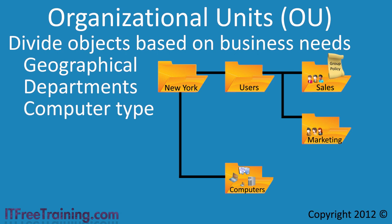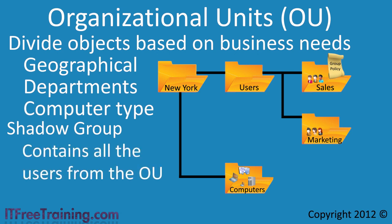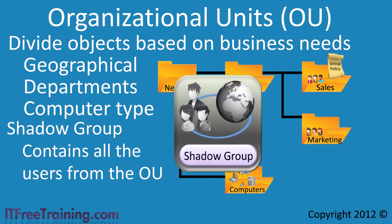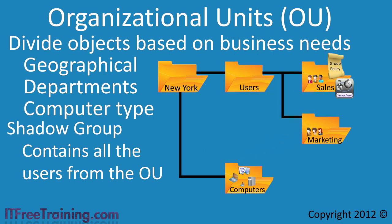In order to use the OU structure that you have created for permissions, Microsoft introduces the concept called a Shadow Group. A Shadow Group is a regular Active Directory Group that simply contains all the users in the OU. If I create a Shadow Group for the Sales OU, this group will contain all the users from the Sales OU. If you want to give all the Sales users access to a file share, you simply use this group. To keep the Shadow Group up to date, you will need to update its membership each time a user is added or removed from the Sales OU. It is possible to create a script to do this process automatically, but this will need to be configured.